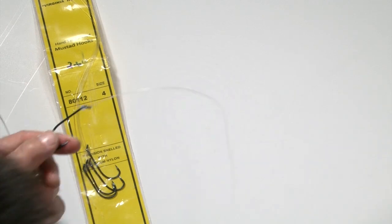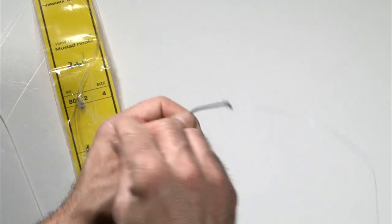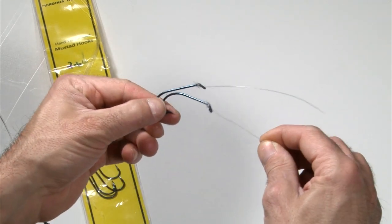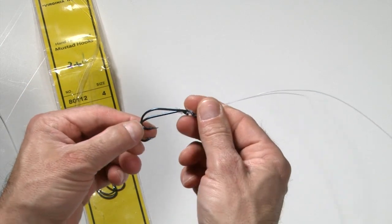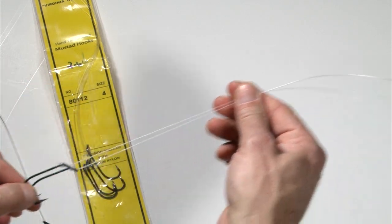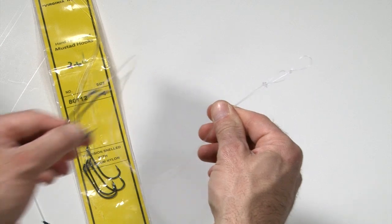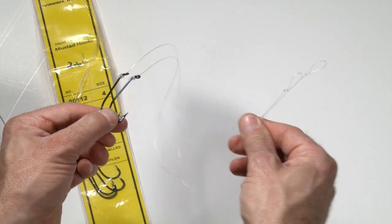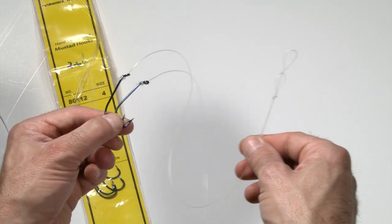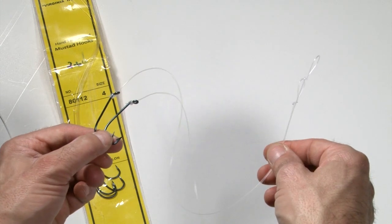And the beauty of doing this is if you tie multiple rigs and you're using the same length leader material, all the rigs will be almost identical in length. In fact, if you're careful, you can tie a hundred rigs and they'll all be pretty much identical in length.